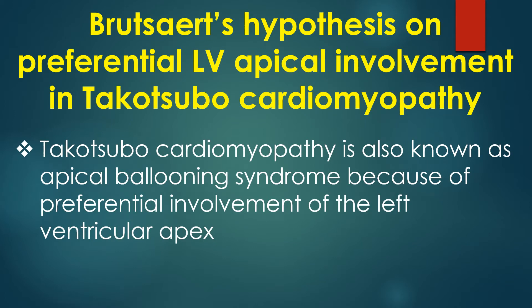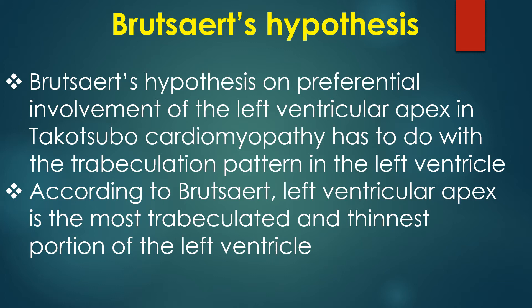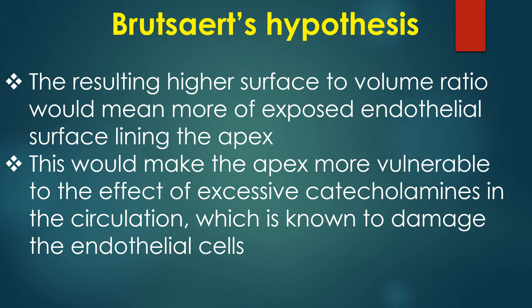Bruzard's hypothesis addresses the preferential left ventricular apical involvement in Takotsubo Cardiomyopathy, also known as Apical Ballooning Syndrome. According to Bruzard, the left ventricular apex is the most trabeculated and thinnest portion of the left ventricle. The resulting higher surface area to volume ratio means more exposed endothelial surface lining the apex, making it more vulnerable to the effect of excessive catecholamines in the circulation, which are known to damage endothelial cells.